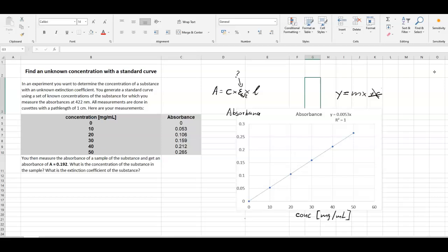Okay, now with this very good trend line or line of best fit, and we know it's a very good line because this R square value is equal to 1, which means it's a perfect fit, we can now use our absorbance that we measured for the unknown concentration. So here, the unknown concentration had an absorbance of 0.192.